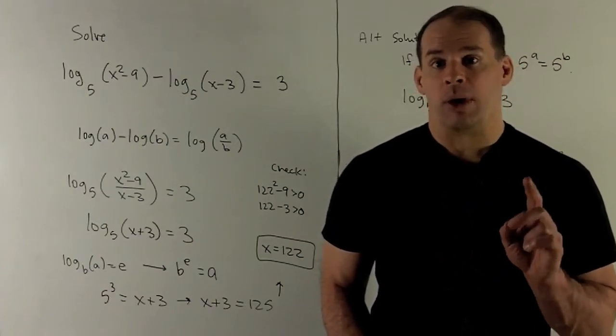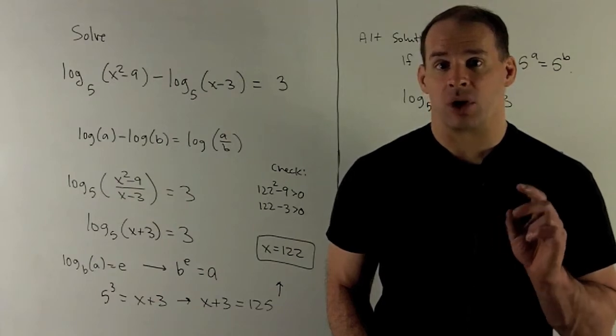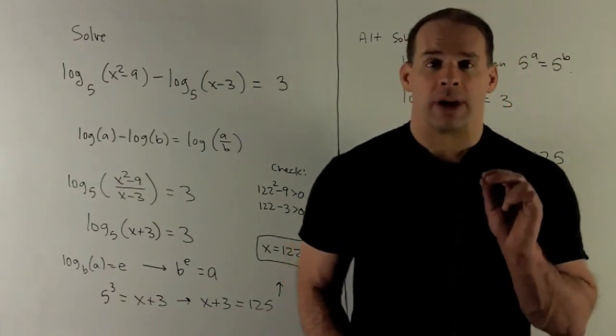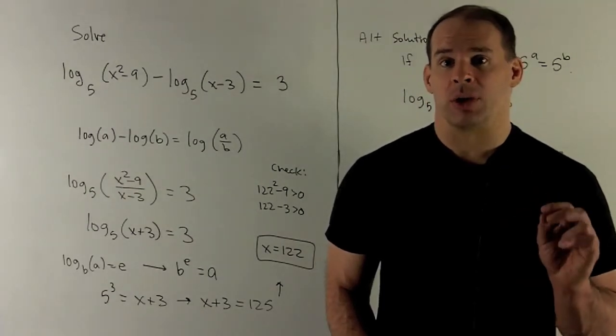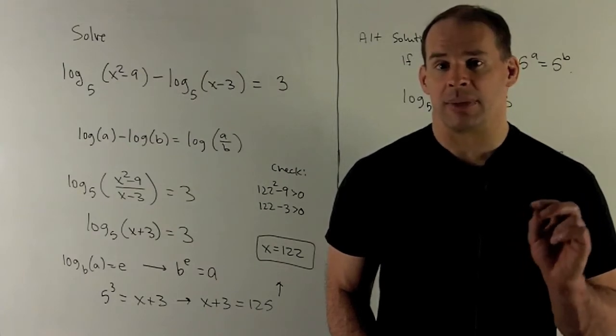That's our answer. Now one last thing is we have to check to make sure that actually makes sense in our original equation. What could go wrong? We're not allowed to put negative numbers or 0 into a logarithm. So I'm going to just check putting 122 into this doesn't make that happen.